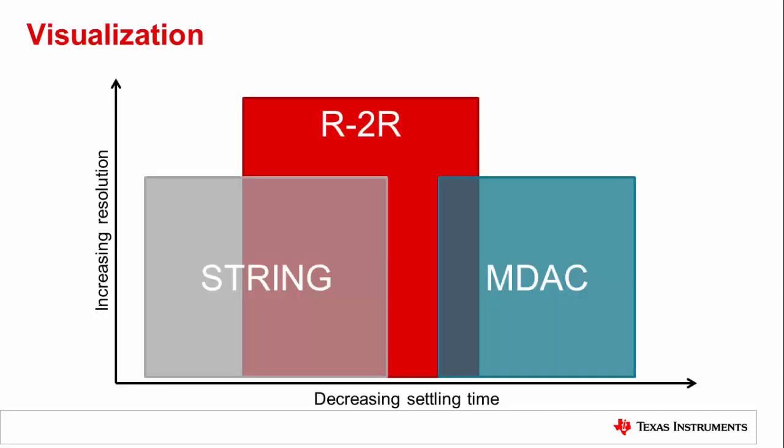Having covered the three main architectures of a precision DAC, let's look at this visual for a summary of the different types of architectures. In this graph, the x-axis represents decreased settling time, where the right side represents faster devices. The y-axis represents increasing resolution. As you can see, MDACs and String DACs have the same resolution range, but MDACs settle significantly faster. Overlapping these two in speed is the R2R architecture, which features higher resolution and medium settling speeds. Keep in mind that this depiction just shows two common specifications and doesn't cover other important specs like noise, linearity, or even price.